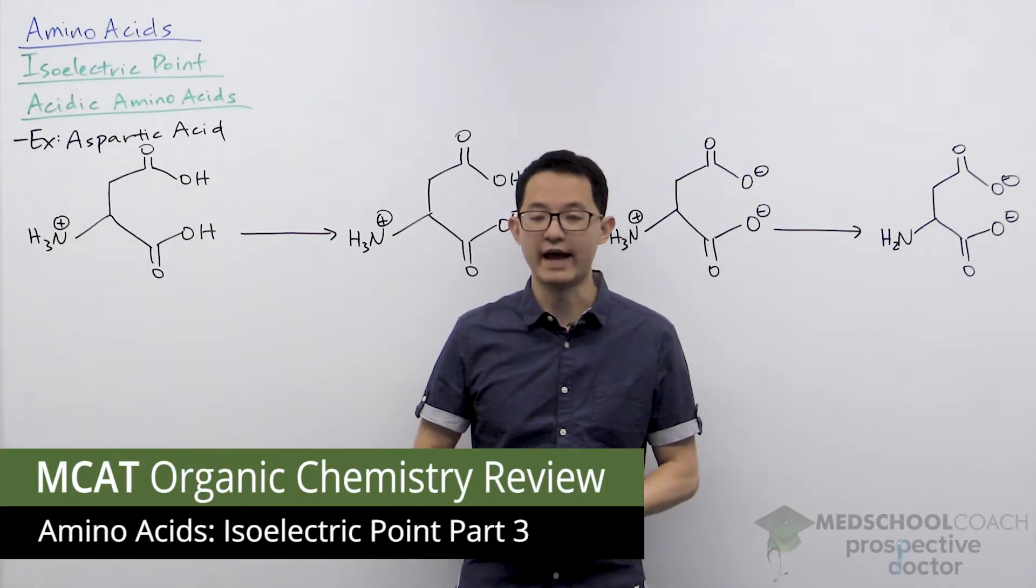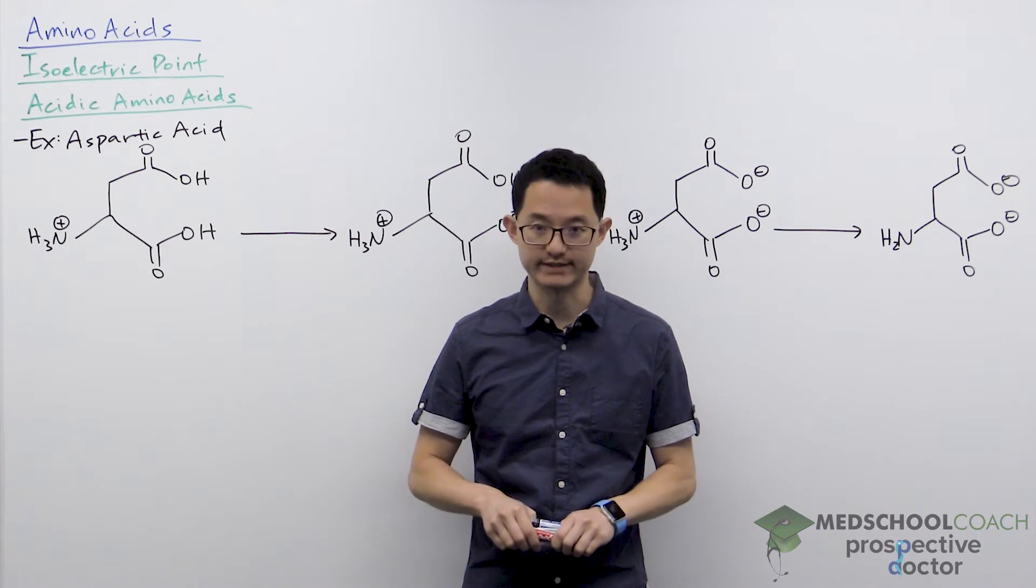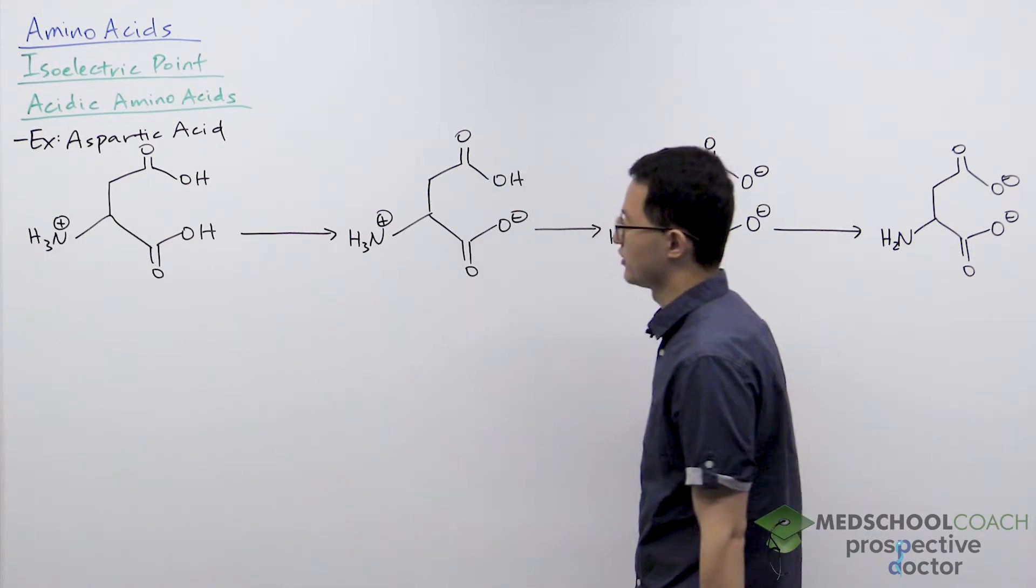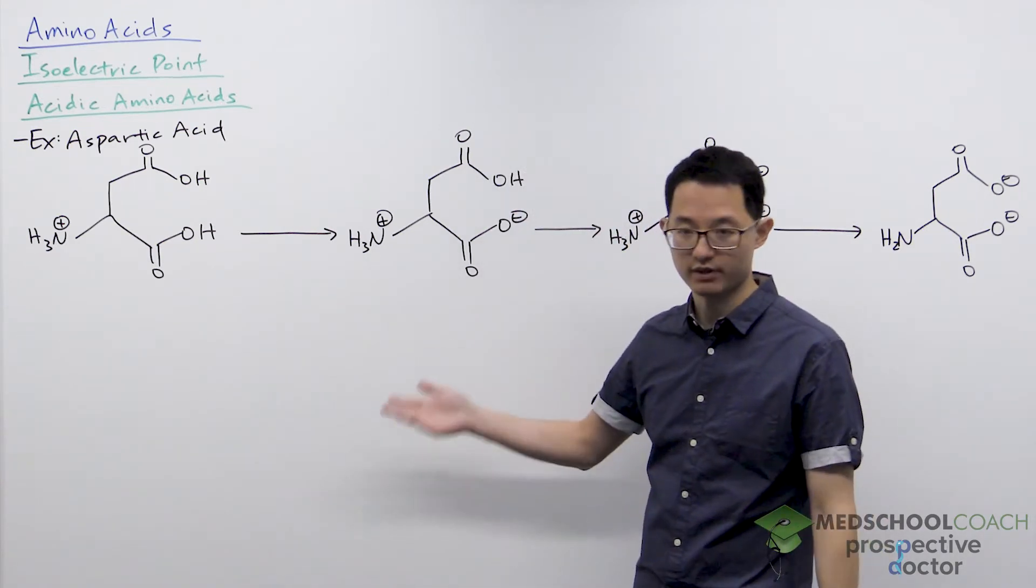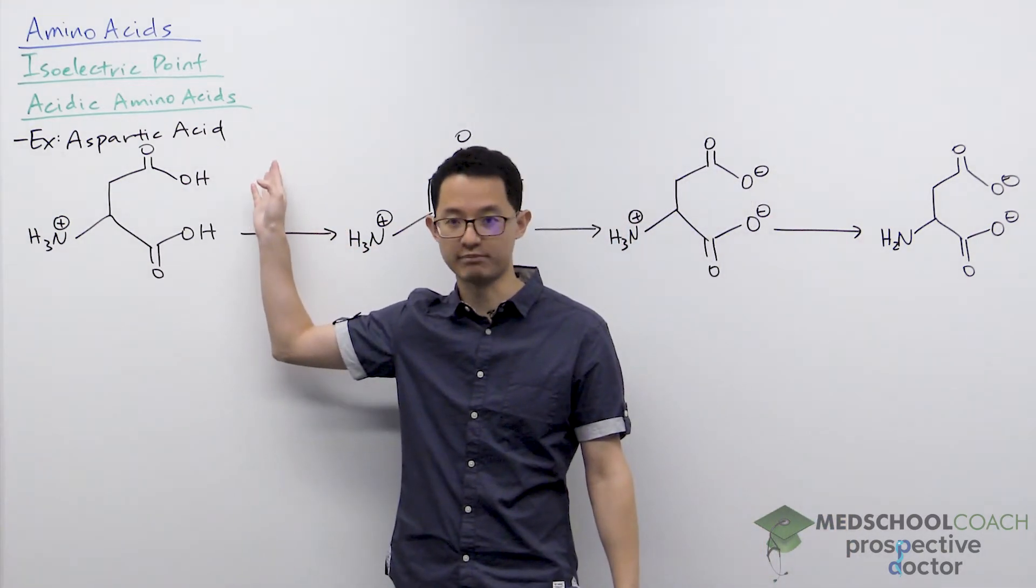In this video we're going to talk about how to calculate the isoelectric point of acidic amino acids. There are two acidic amino acids: aspartic acid and glutamic acid. In this case we're going to use aspartic acid as our example.